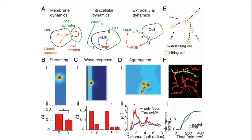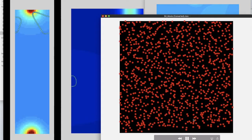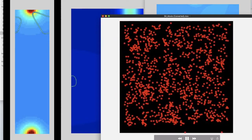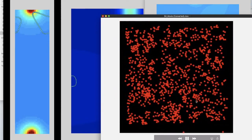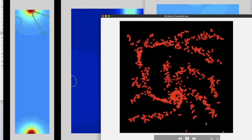However, to study hundreds and thousands of cells, we have to simplify the model. This is done by coarse-graining. We take information from the detailed simulations, like the gradient profile of the secreted cyclic AMP, and feed it into these simpler simulations. Indeed, these coarse-grained simulations lead to aggregation. When cells are excited, they pulse cyclic AMP, shown in yellow, form these streams and ultimately aggregate.